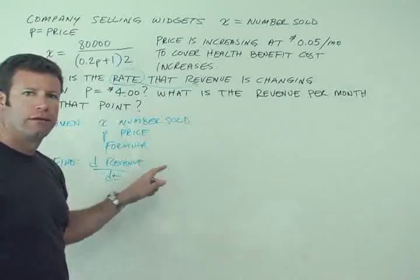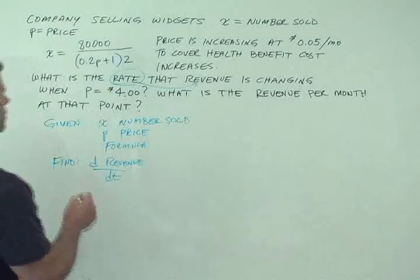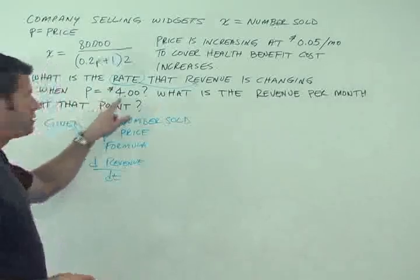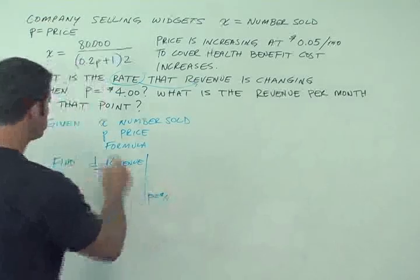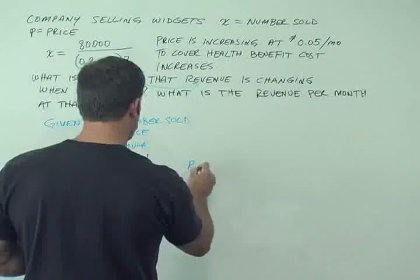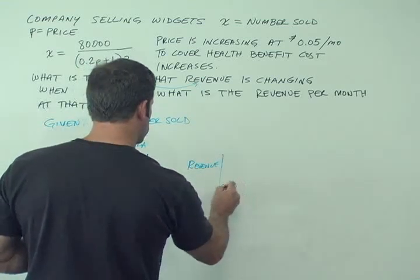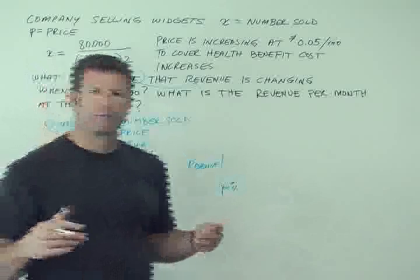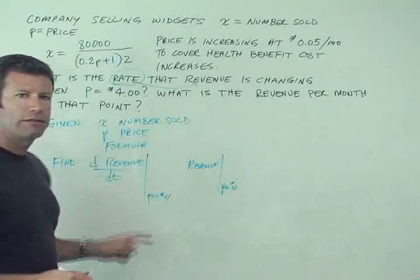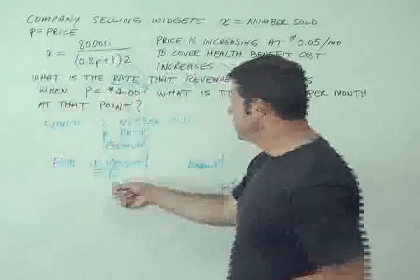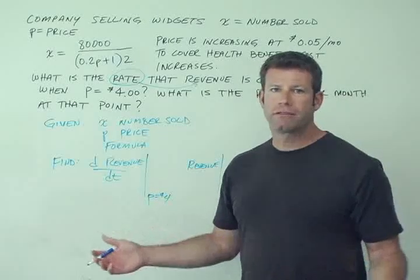We have not defined revenue yet, but we'll get to that. And it says, what is the revenue per month at that point? And then we want to find, right, and this rate is at when p is 4, so we're going to say d revenue dt when p equals $4. And I also want to find the revenue at that point, which is just going to be revenue when p equals $4. So now I've identified all the facts and I've translated this into something that I can work with and look for as an answer. So now when I get to the point when I have d revenue dt or revenue, then I can stop. There'd be no point to continue to solve the problem beyond the point of getting the answer requested.